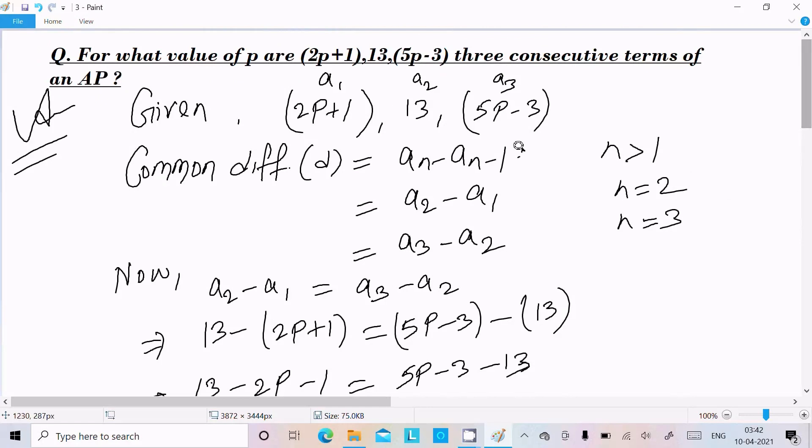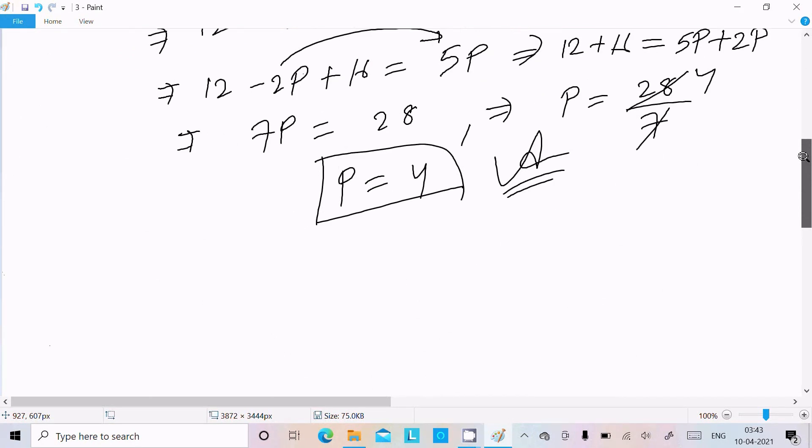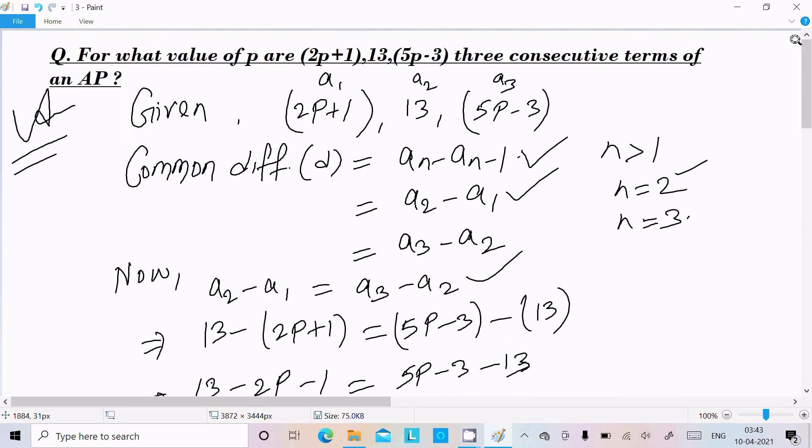So p equal to 4 is the correct answer. So this is the way we can find out the value of p. You need to use the common difference formula, so an minus an-1, use a2, a3, and here you can get common difference are same. So that we can write a2 minus a1 equal to a3 minus a2, put the value, find the p. So this is the way we can solve this.